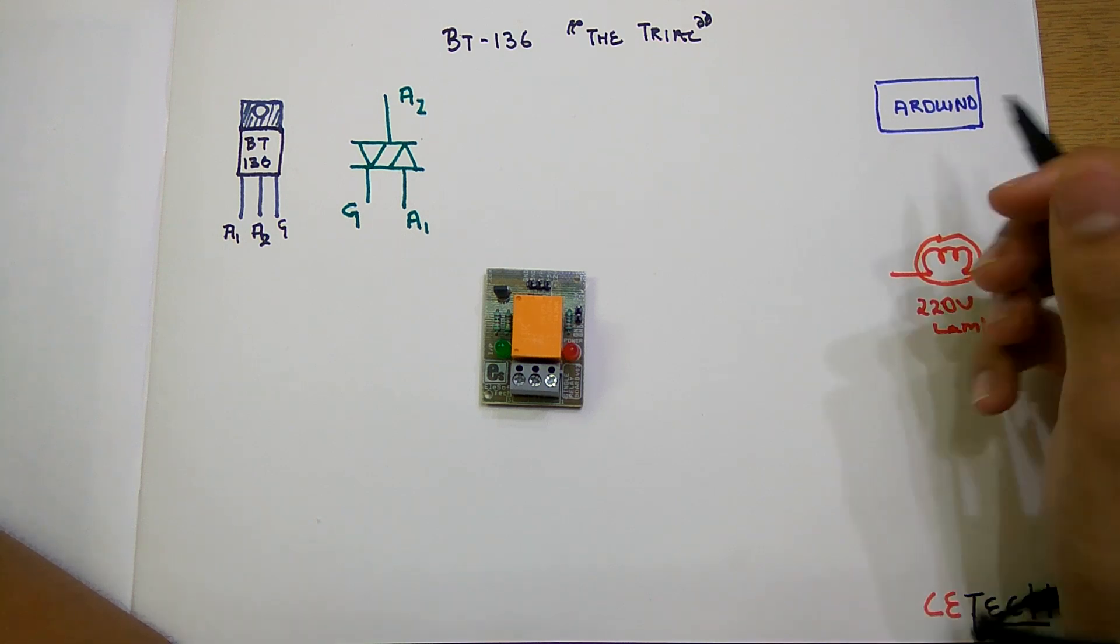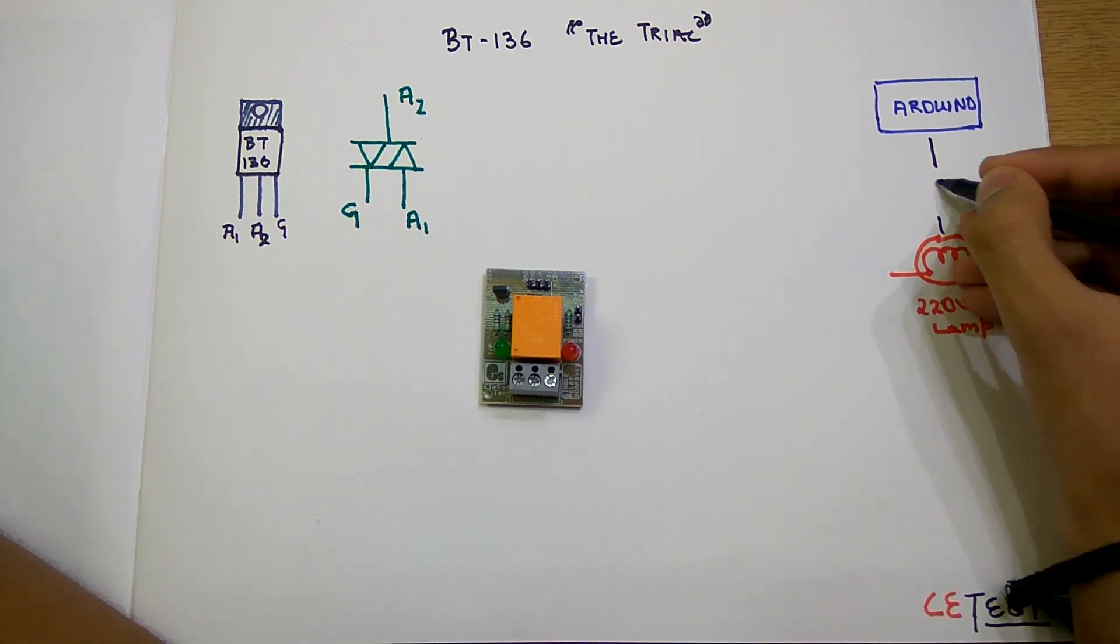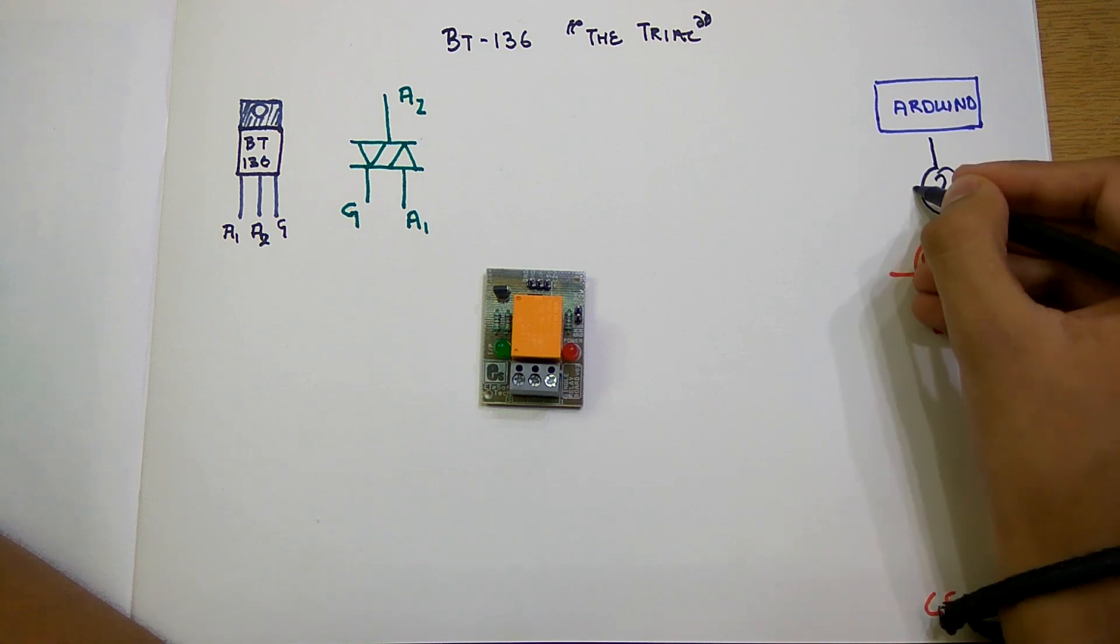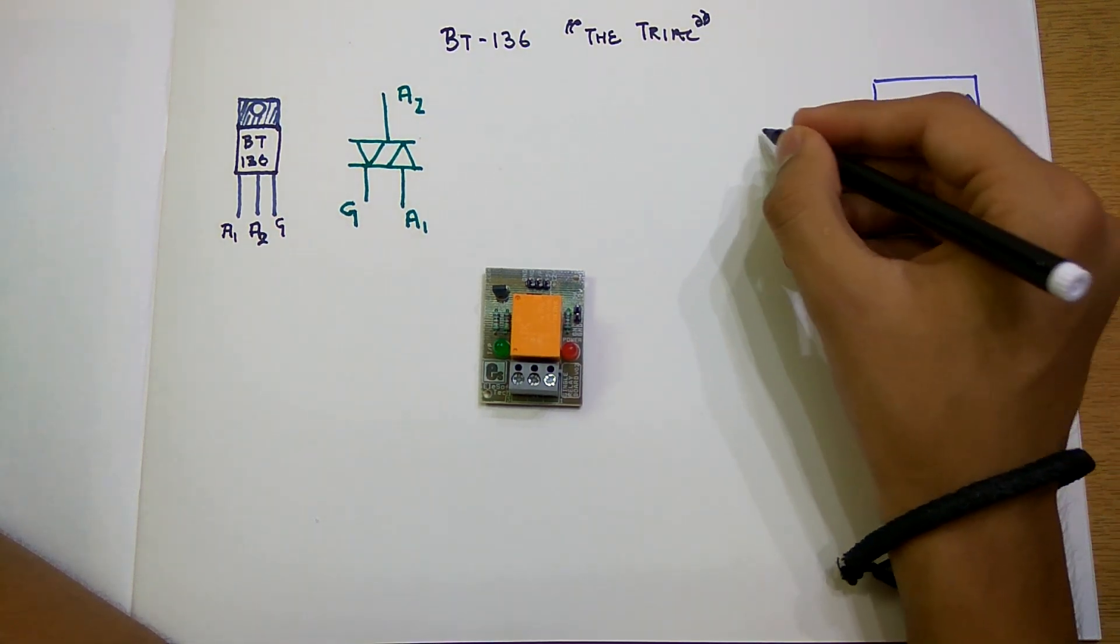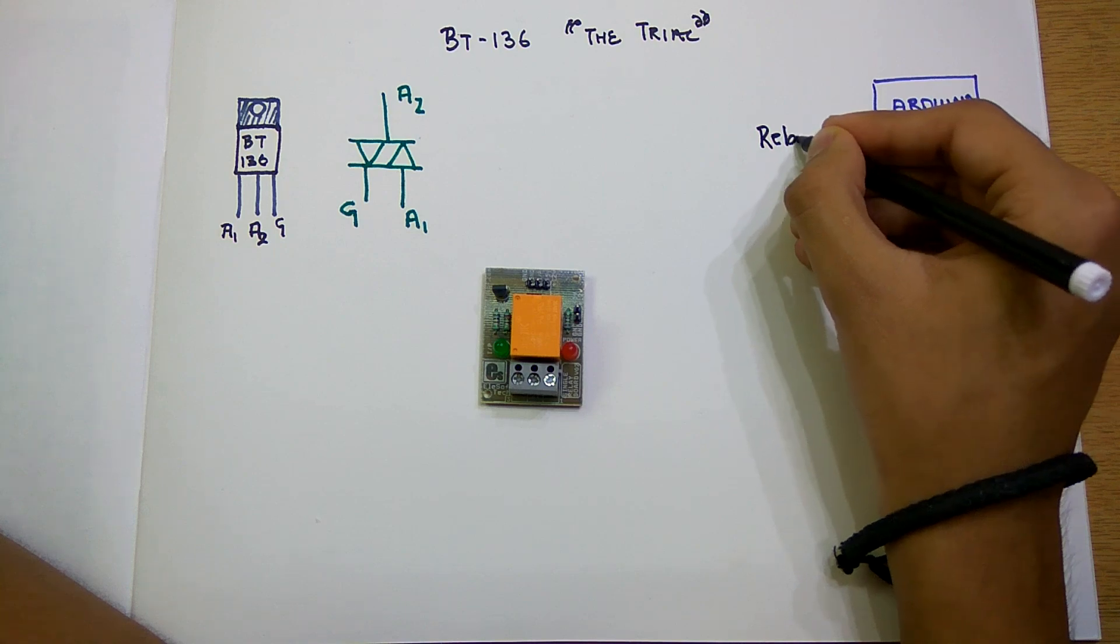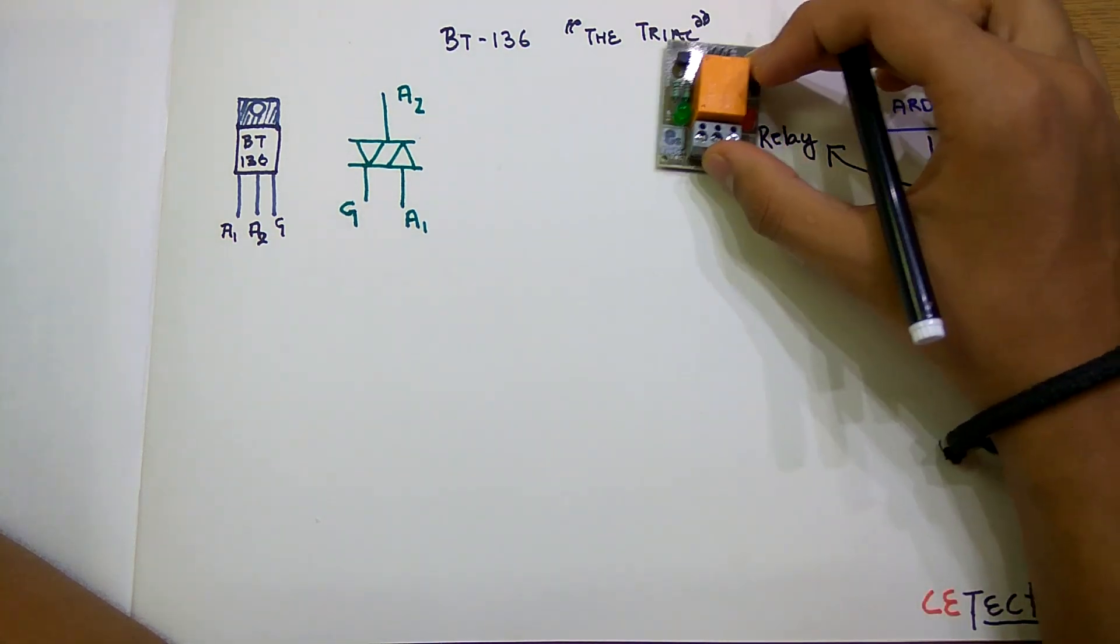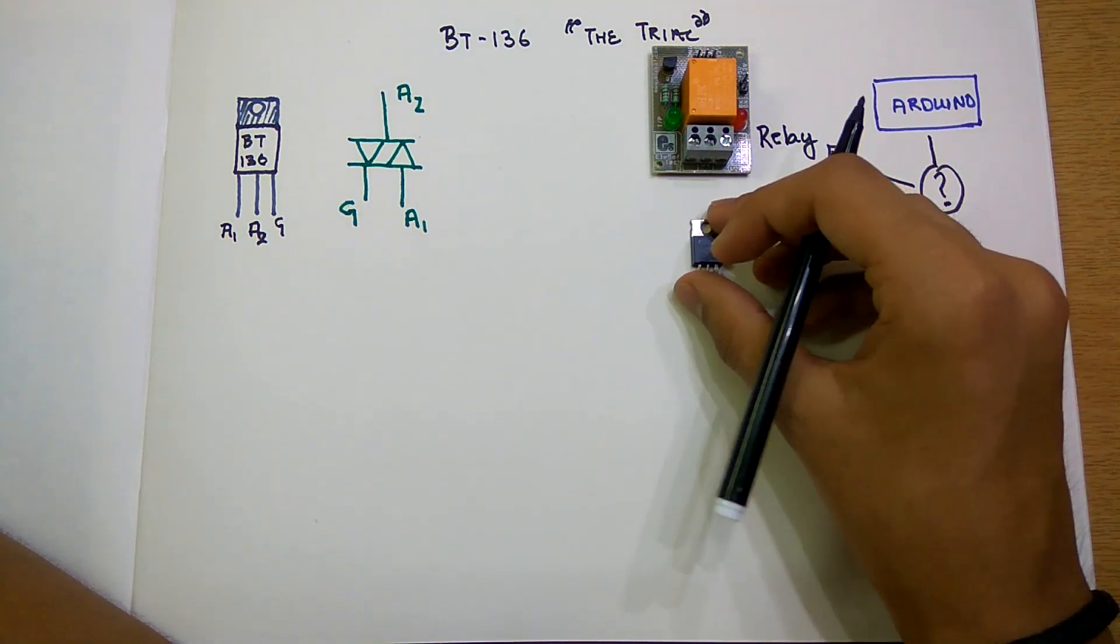So what interface or interlink would we use right here? There are two options. The first is the old one, which is the relay, and the second one is the TRIAC.